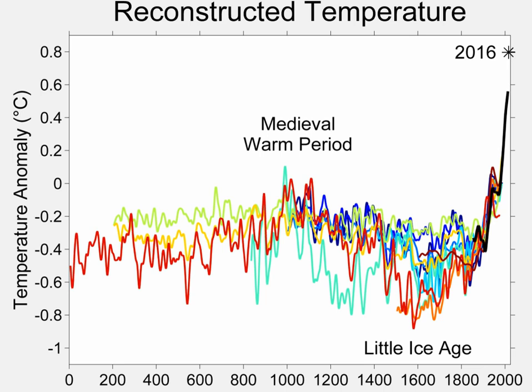The 2007 IPCC Fourth Assessment Report cited 14 reconstructions, 10 of which covered 1,000 years or longer, to support its conclusion that average northern hemisphere temperatures during the second half of the 20th century were very likely higher than during any other 50-year period in the last 500 years and likely the highest in at least the past 1,300 years.